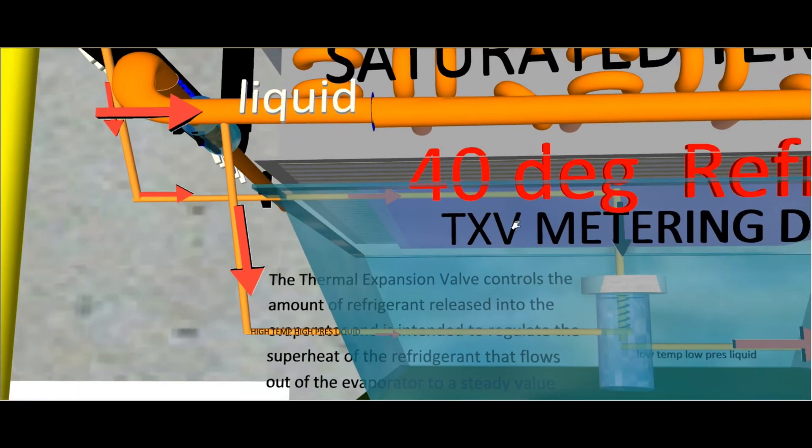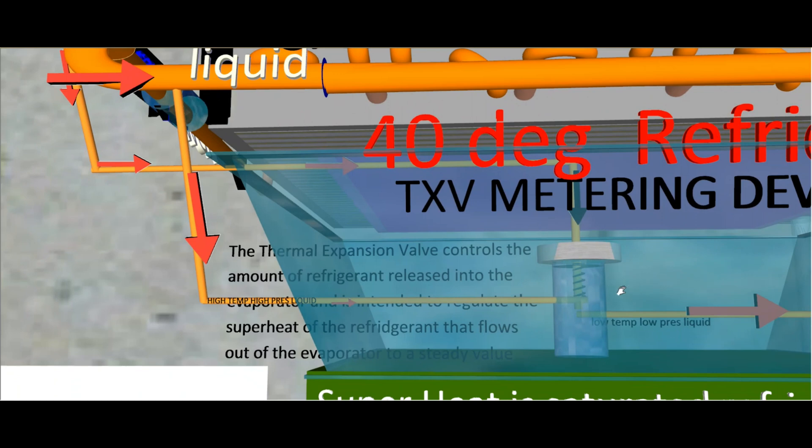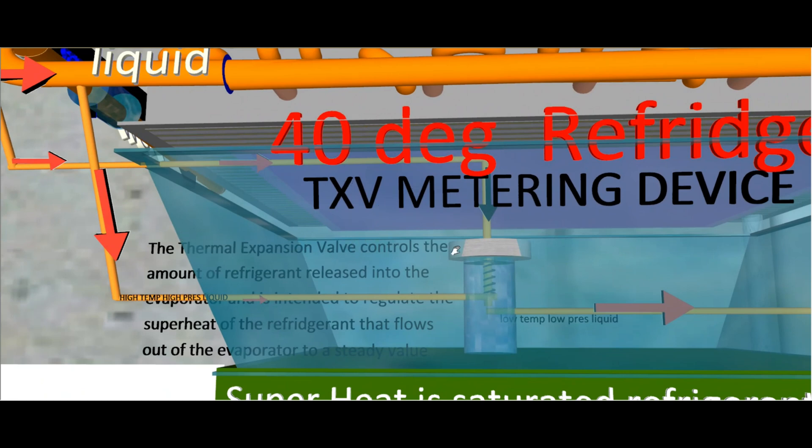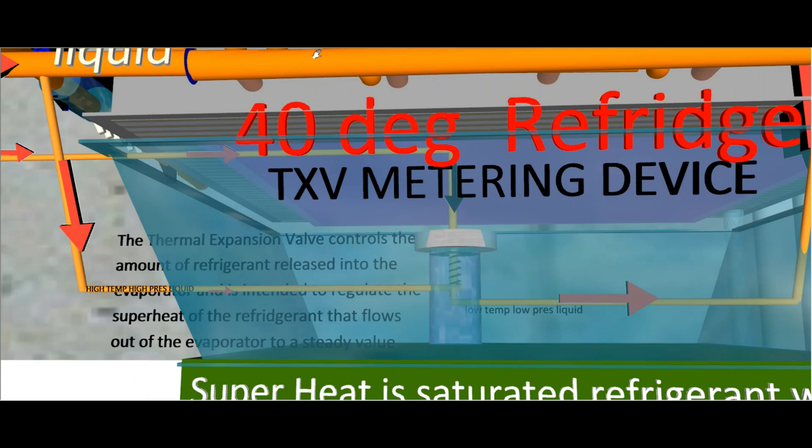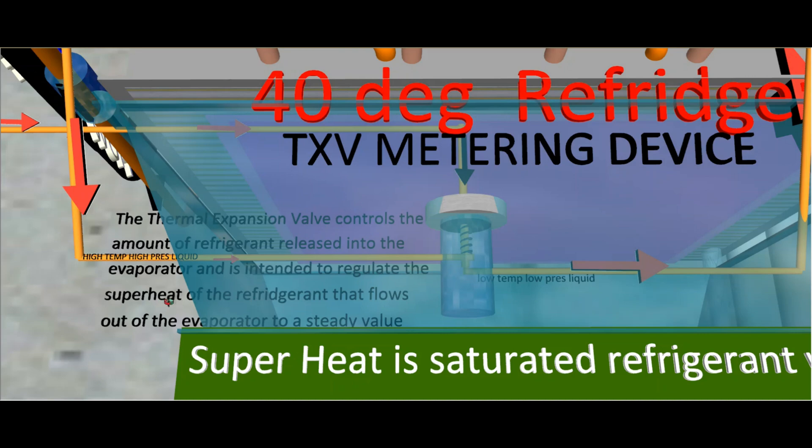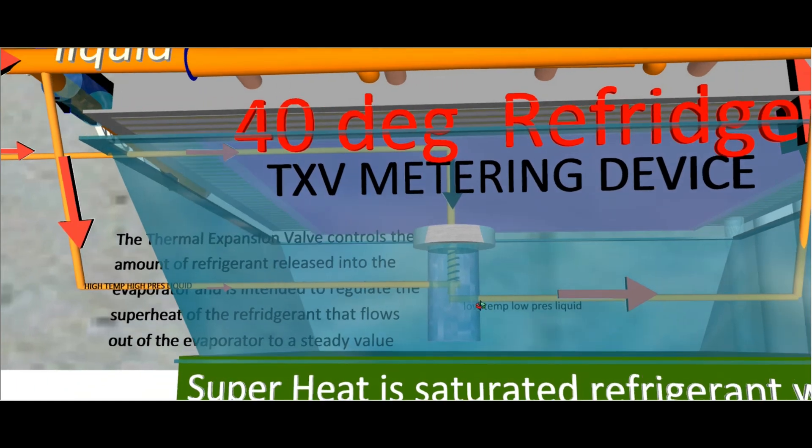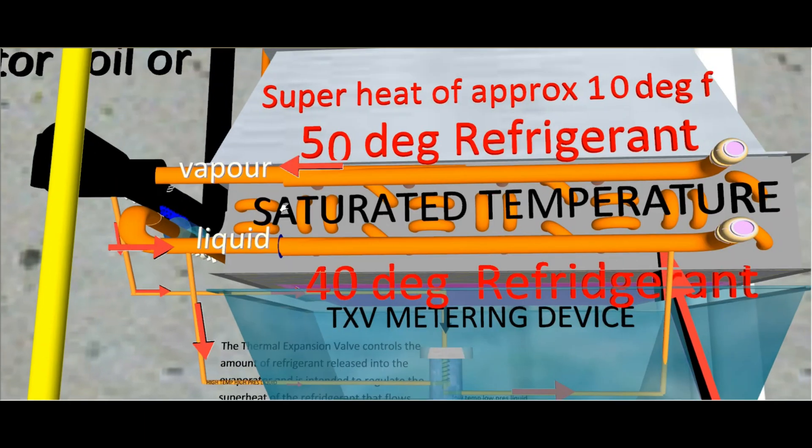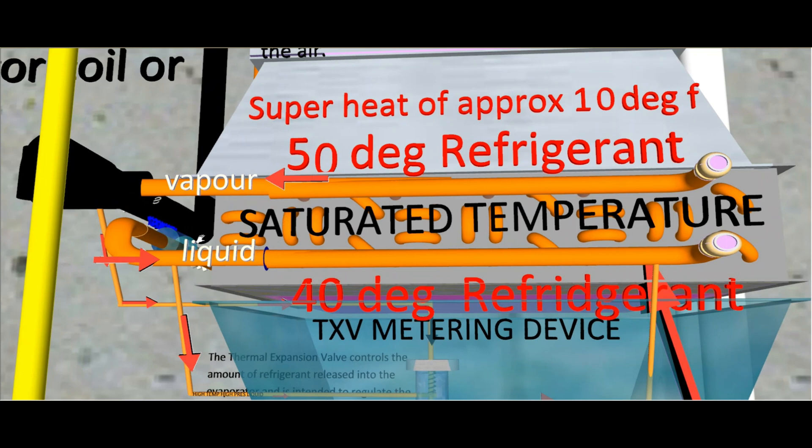And another name for this metering device—there's two or three different kinds—the one I'm using apparently is the popular one, the thermal expansion valve. It controls the amount of refrigerant that goes through the evaporator coil and is intended to regulate the superheat of the refrigerant that flows out of the evaporator to a steady value. So it's going to decrease it down this small tube, and that is going to give it a lower pressure. The lower the pressure, the lower the temperature.